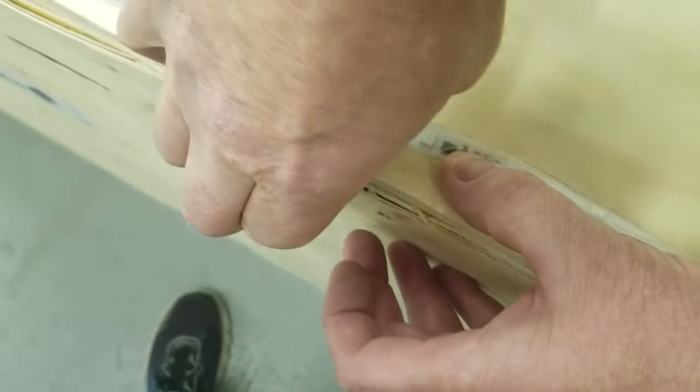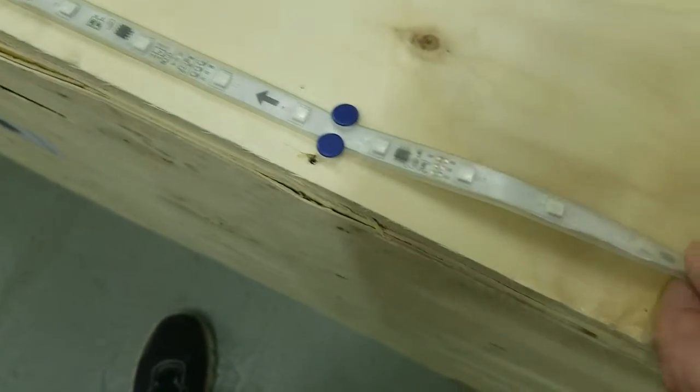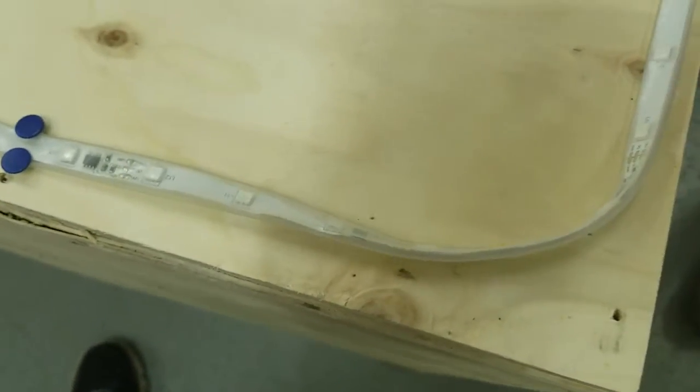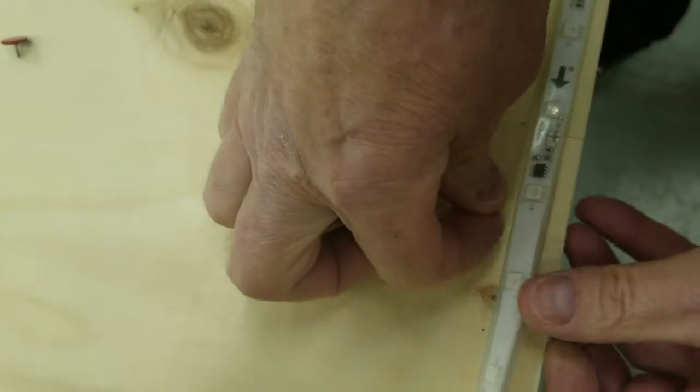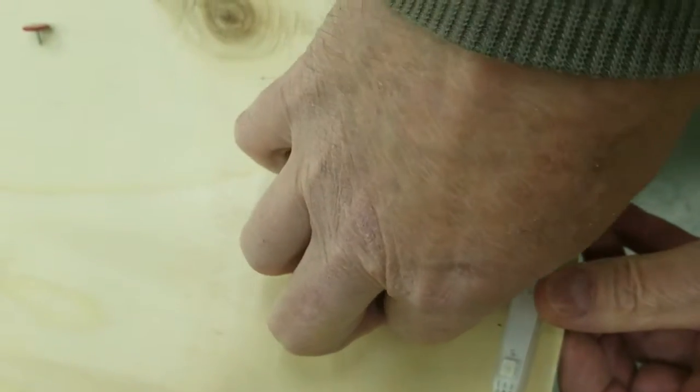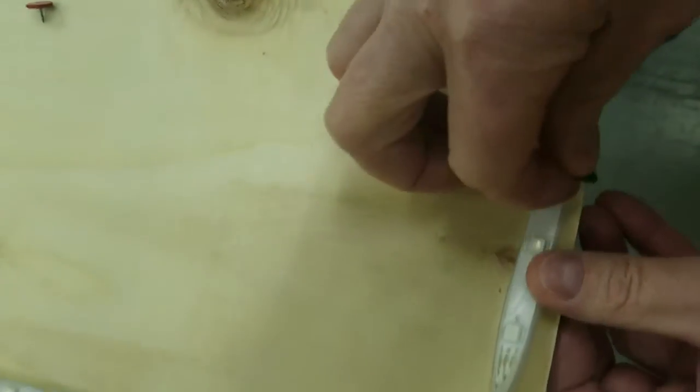You can go on both sides if you want to hold it even better just to make sure it doesn't go anywhere. Just go around your corner and do it in an area where there's no in-between lights, because you don't want to be putting that on the lights themselves.